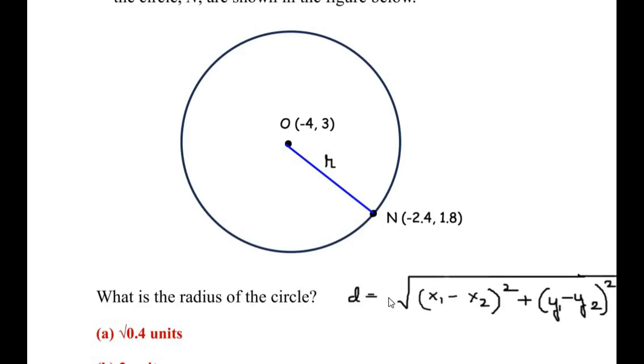Now let us consider the point O as (x₁, y₁) and the coordinates of N as (x₂, y₂). Now we have to just substitute the value of x₁, x₂, y₁, and y₂ in this distance formula to get the radius.